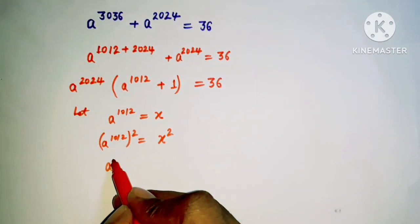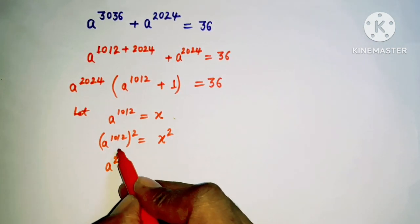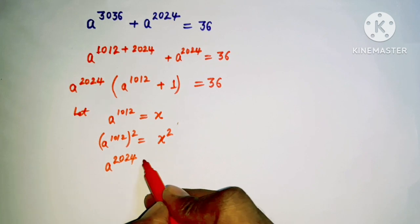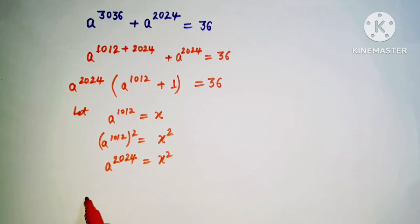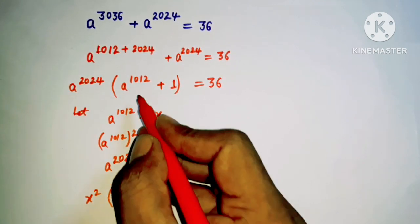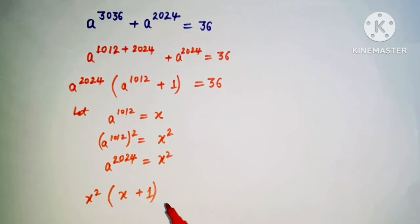And this number is giving you a to the power 2 multiply 1012, that is giving you 2024, that is x square. So instead of this we can put here x square, and here we have x, and here we have plus 1, and here we have 36.